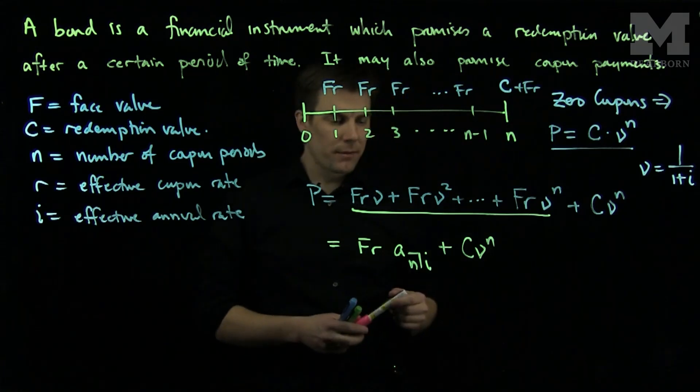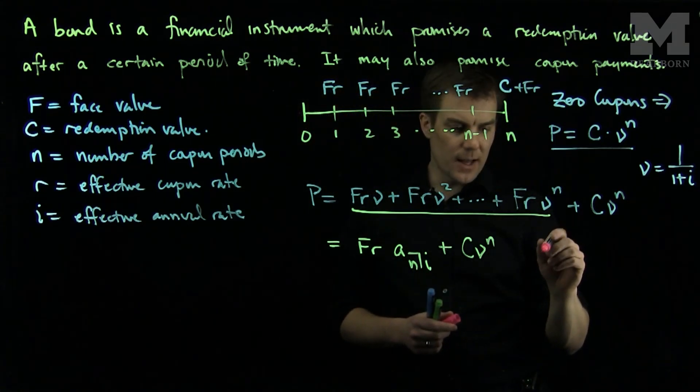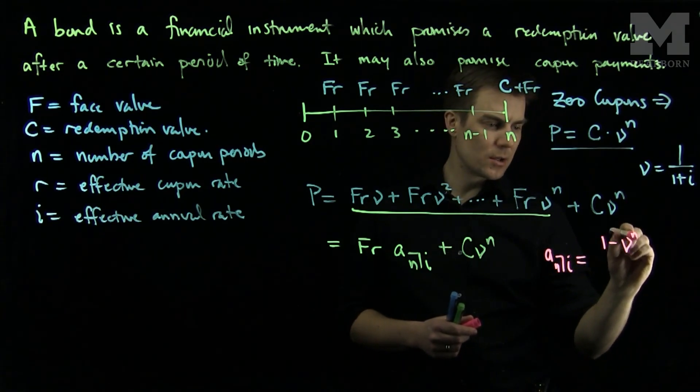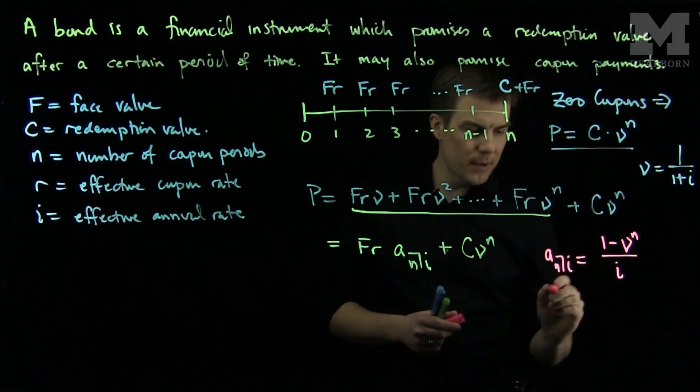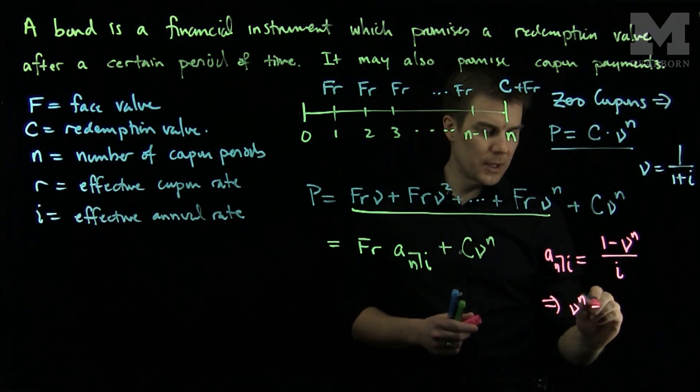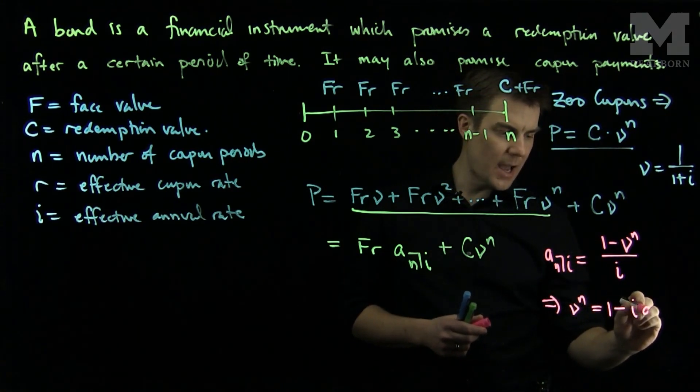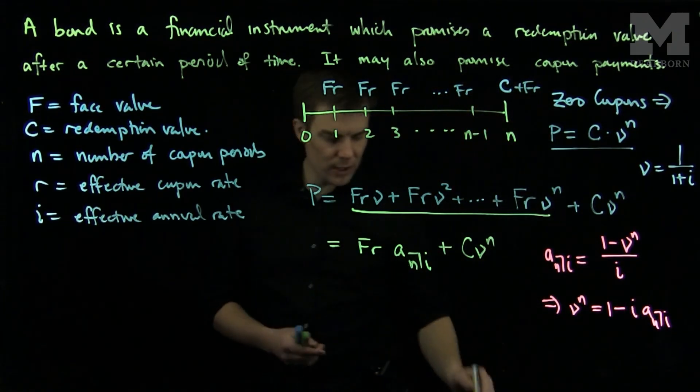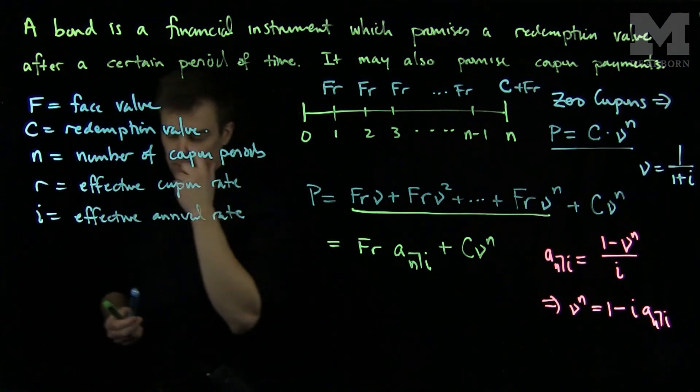We can now simplify this expression using the fact that a angle N at I is 1 minus ν^N over I, which tells me that ν^N will be equal to 1 minus I times a angle N at I. So using this algebraic relationship, we can find another formula for the price of a coupon bond.